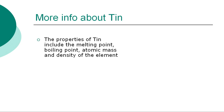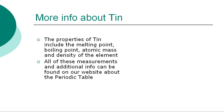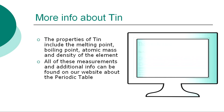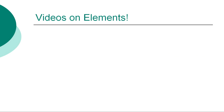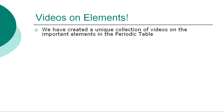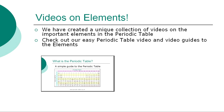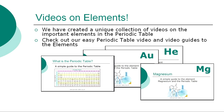The properties of tin are classified by many other factors, including the melting point, boiling point, and density of the element. All of these measurements, together with additional facts and information, can be found on our website. So ends our simple guide to the element tin. We have created a unique collection of videos on many other important elements, developed to enable chemistry students to gain a fast overview of the properties of each of the elements, together with their discovery and history. Check out our easy video guides to the elements via our website.